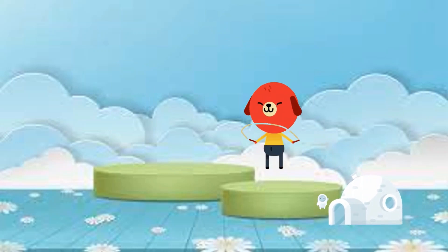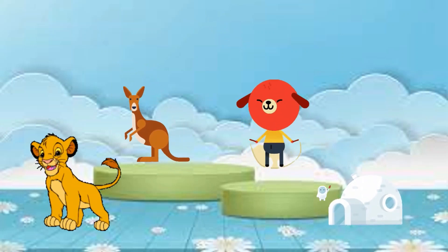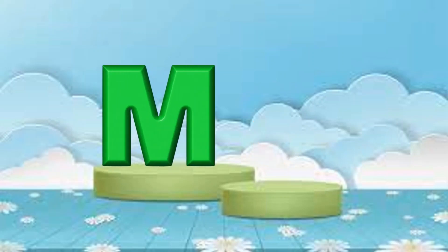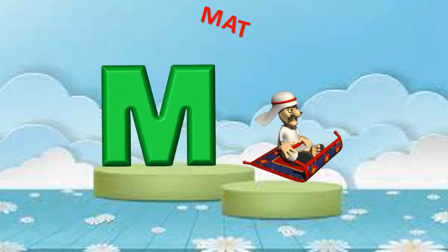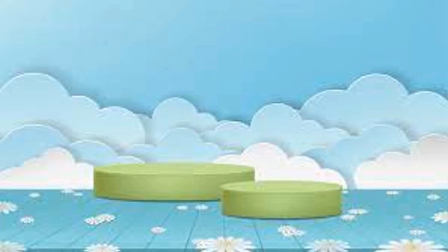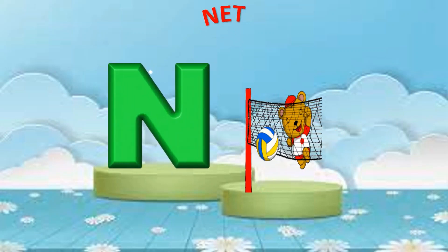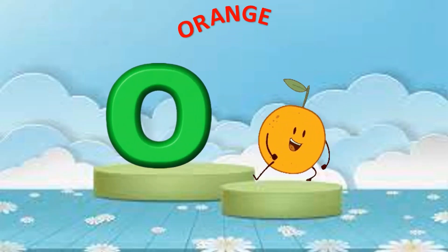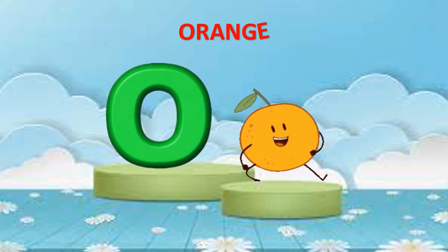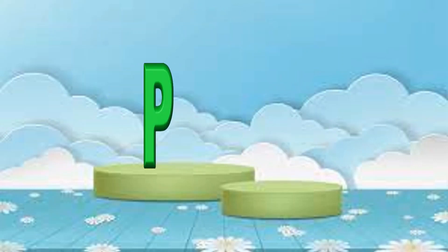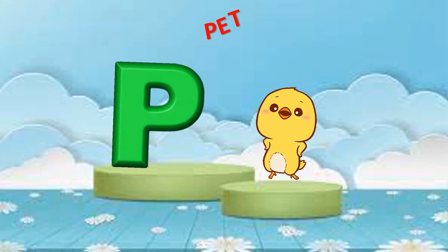M is for mat, ma-ma-mat. N is for net, n-n-net. O is for orange, o-o-orange. P is for pet, p-p-pet.